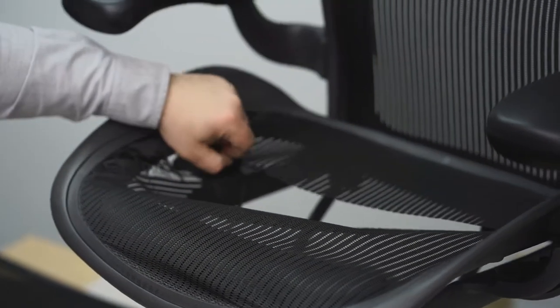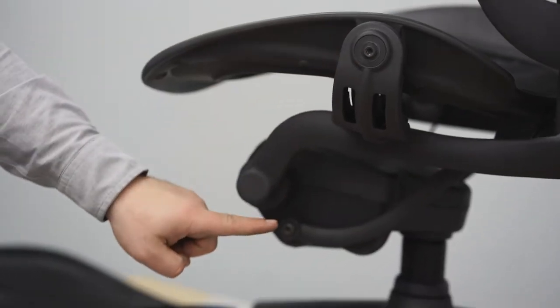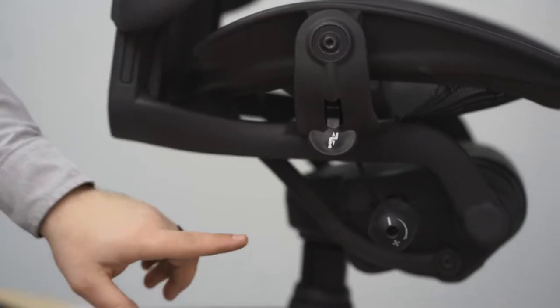Sometimes your seat mesh may rip and tear. To replace the seat mesh, start by removing the two screws on either side of the chair as shown in the video.